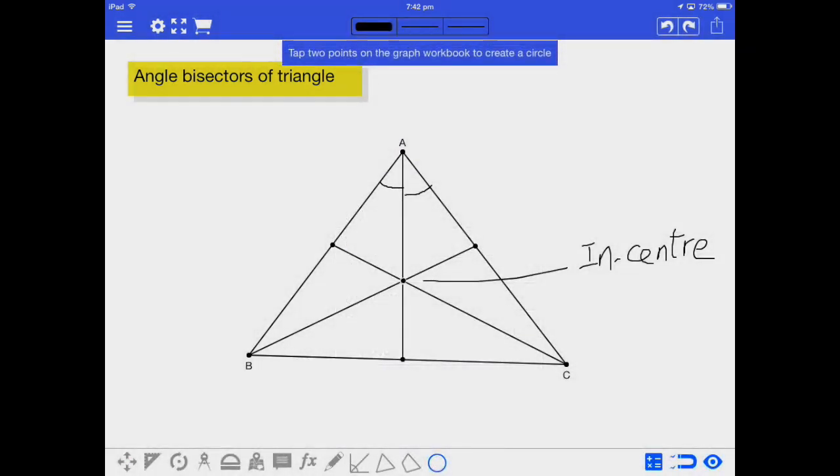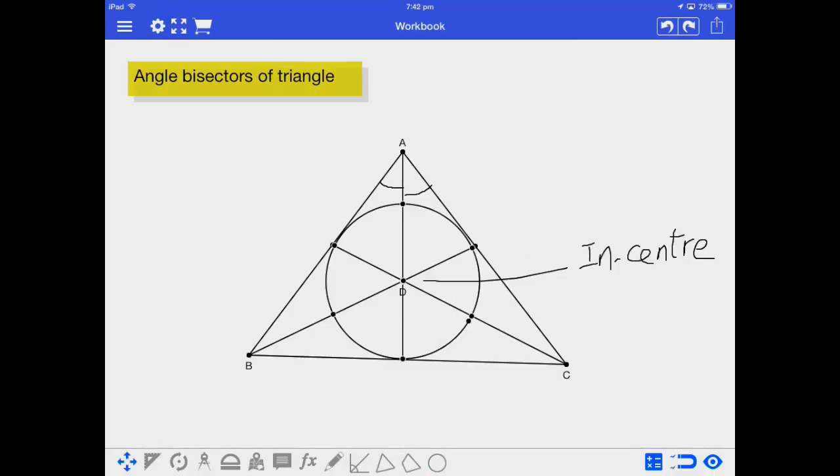Actually, we can draw a circle with the in-center as the center of the circle. We can enlarge the circle until it touches all three sides of the triangle. We call this circle the in-circle of the triangle.